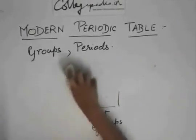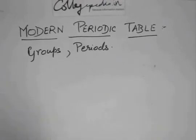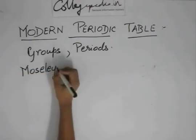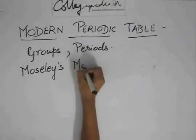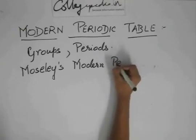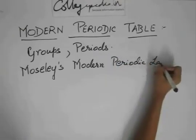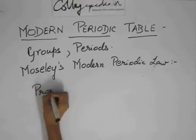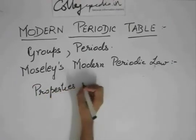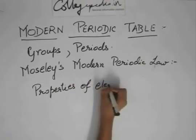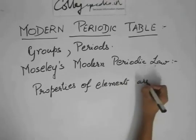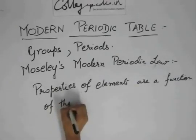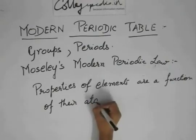The modern periodic table is based on one very simple law which was proposed by Moseley. He was a scientist. It's called the modern periodic law. What this law states is a very simple thing: that the properties of elements are a function of their atomic number.